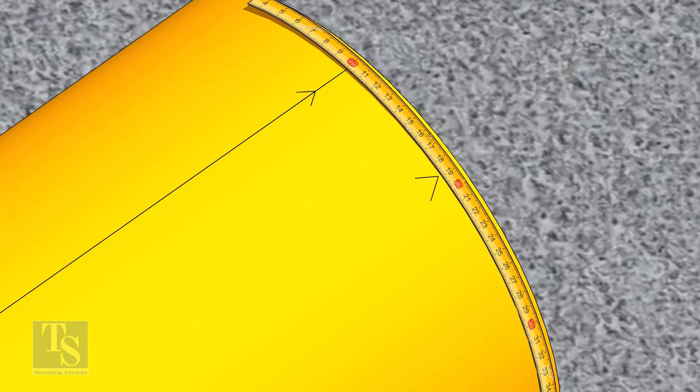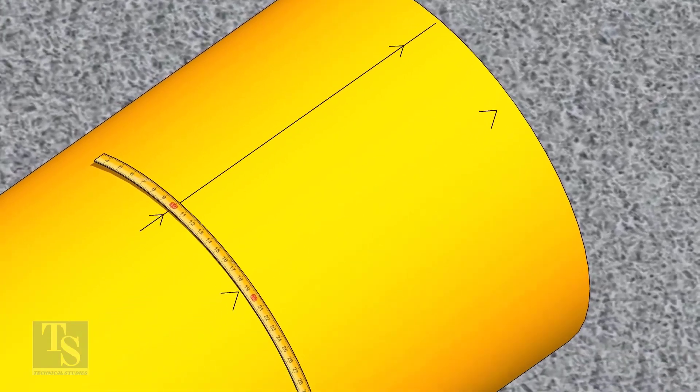Since we are rotating the flange 25 degrees anticlockwise, mark 88.5mm anticlockwise on the pipe, as shown.